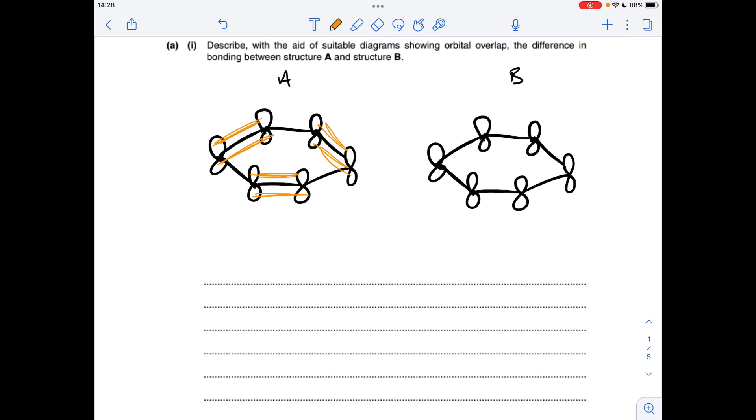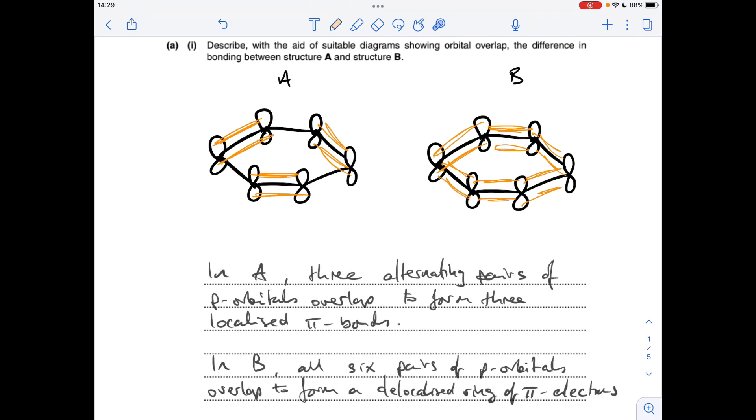In B, which has the circle around the middle, what happens is all of the p orbitals overlap with each other. So we don't get the skipping of p orbitals like we had in A. So how would we describe that? In A, three alternating pairs of p orbitals form three localised pi bonds. Whereas in B, all six pairs of p orbitals overlap to form a delocalised string of pi electrons.